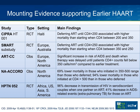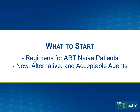I don't have time to go through all the evidence, but a couple of key trials: the NA-Accord trial was the main driver for moving the threshold to 500 in 2009. It was a large observational cohort-of-cohorts in North America showing a 69% to 94% decrease in mortality depending on the CD4 cutoff. The HPTN-052 trial, a large international randomized controlled trial, showed a 96% decrease in transmission in serodiscordant partnerships, and guideline committees will likely incorporate this in the next iteration.